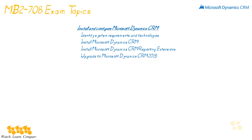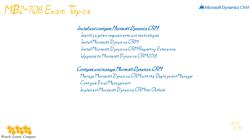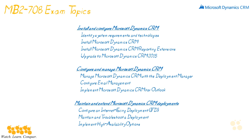For those of you sitting the MB2-708 exam, it's broken down into three categories, each weighing about 30 to 35 percent. The first category is installing and configuring Dynamic CRM, covering identifying system requirements, installation of CRM, CRM reporting extensions, and upgrading to CRM. The second category is configuring and managing Microsoft Dynamics CRM, which includes working with the Deployment Manager, configuring your email system, and implementing Dynamic CRM for Outlook. The third category is maintaining and extending your Dynamic CRM deployment — covering IFD (internet-facing deployment), maintaining and troubleshooting a deployment, and implementing high availability.